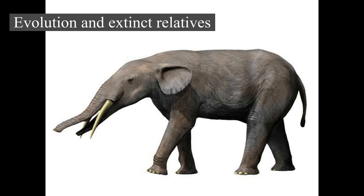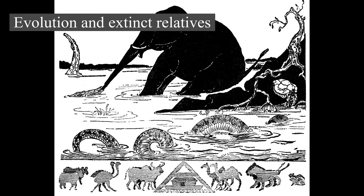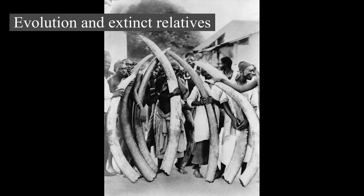Proboscidea diversity declined during the Oligocene. One notable species of this epoch was Eritreum melakeghebrekristosi of the Horn of Africa, which may have been an ancestor to several later species. The beginning of the Miocene saw the second diversification, with the appearance of the Deinotheres and the Mammutids. The former were related to Barytherium and lived in Africa and Eurasia, while the latter may have descended from Eritreum and spread to North America.